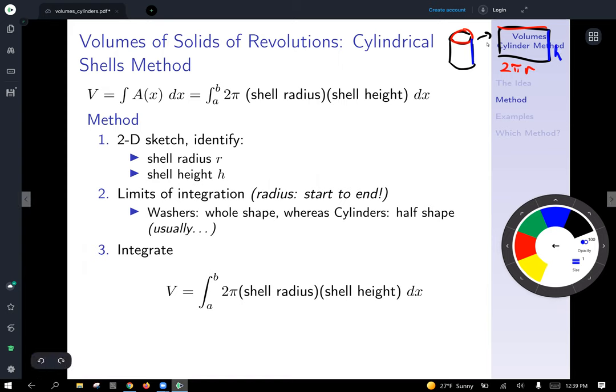So 2π shell radius gives us our circumference. And then 2π radius times the height gives us the surface area of that infinitely thin cylinder, which approximates its volume.